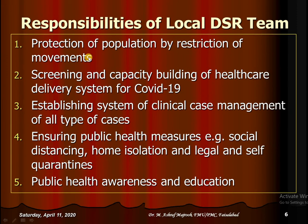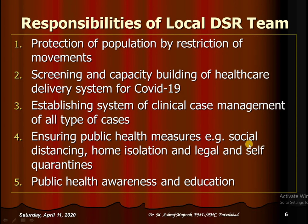Local responsibilities include protection of the population by restriction of movements, screening and capacity building of the healthcare delivery system for COVID-19, establishing a system of clinical case management for all types of cases, and ensuring public health measures like social distancing, home isolation, and legal and self-quarantines. Public health awareness is also a key local responsibility. These are the five summarized responsibilities of the local disease surveillance and response team.